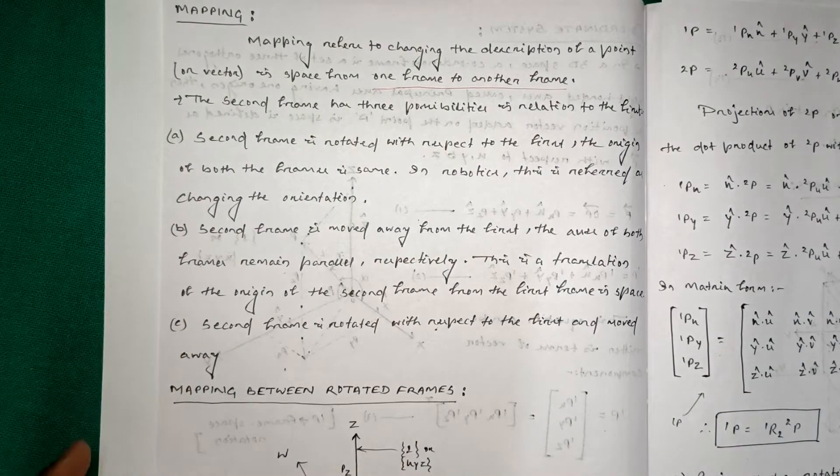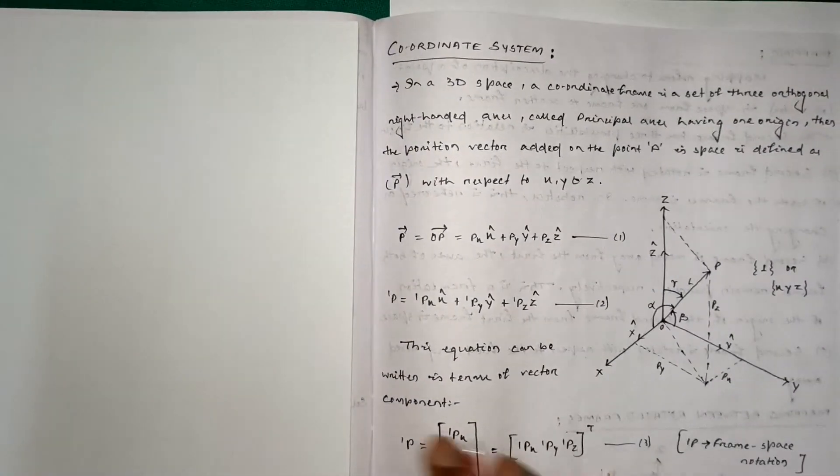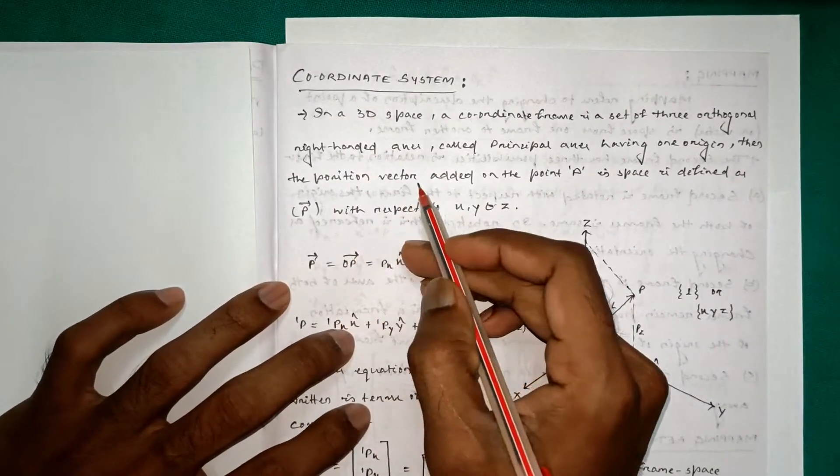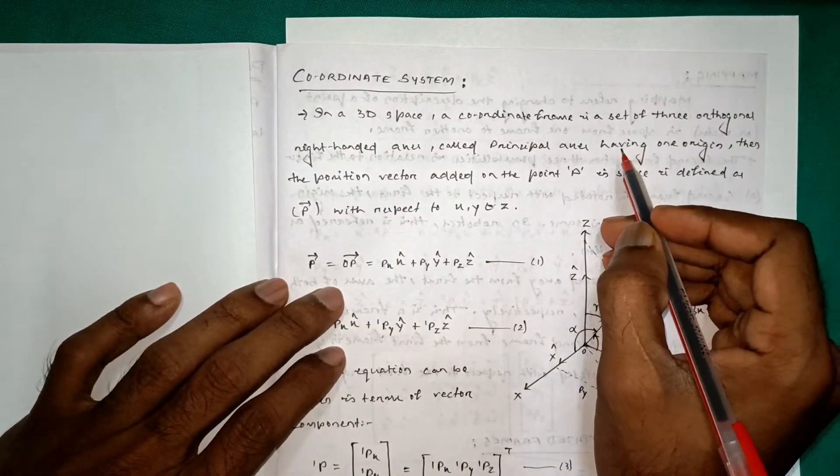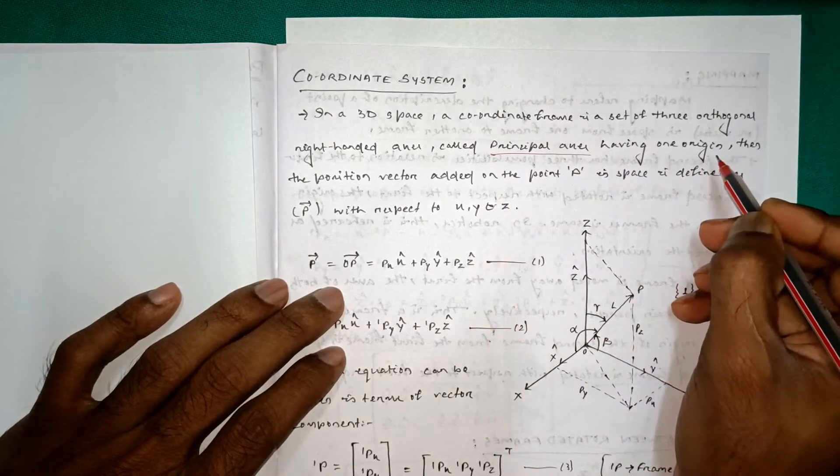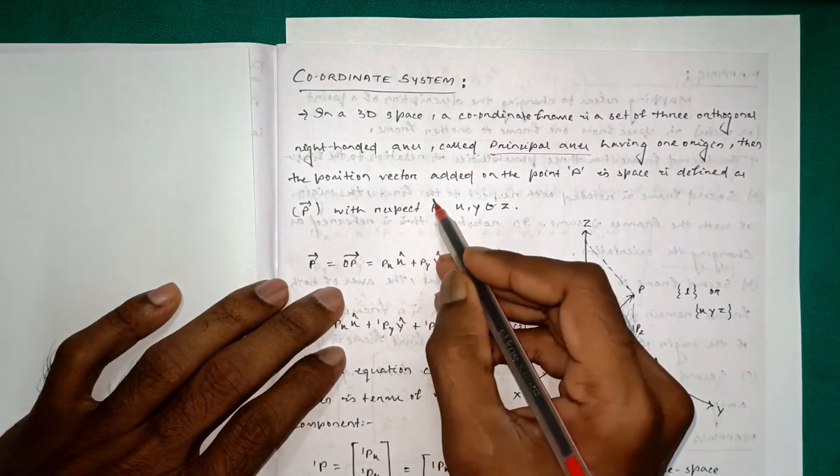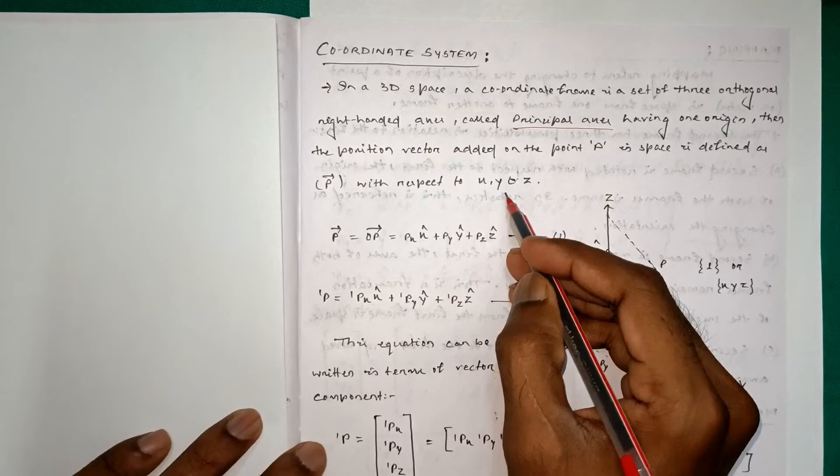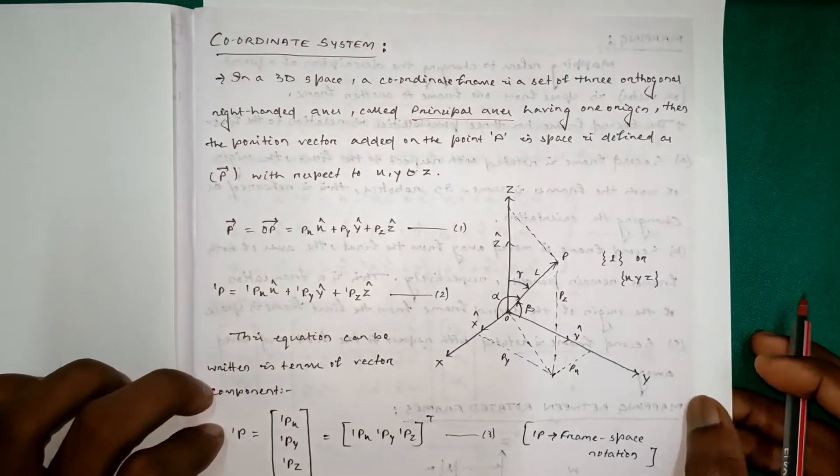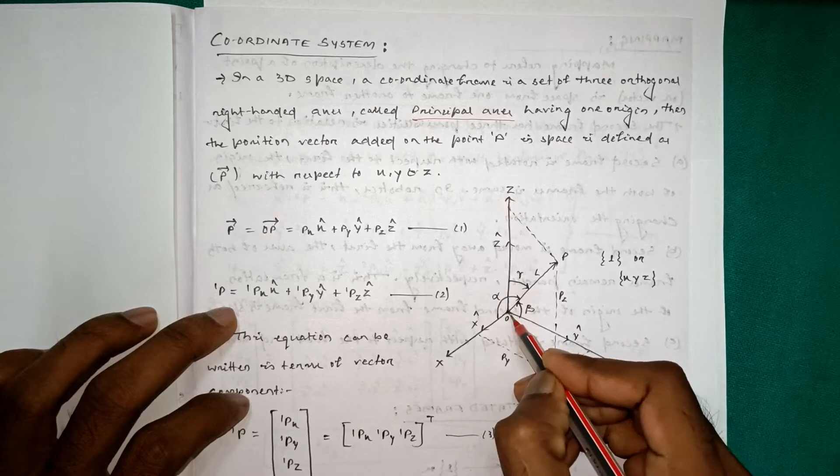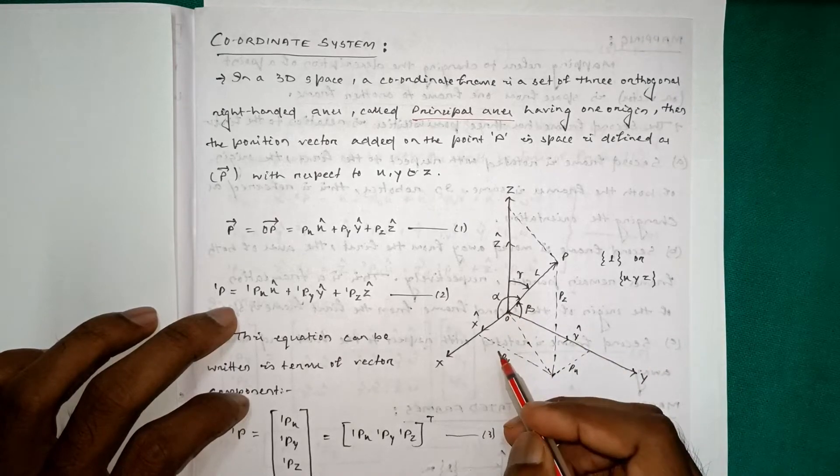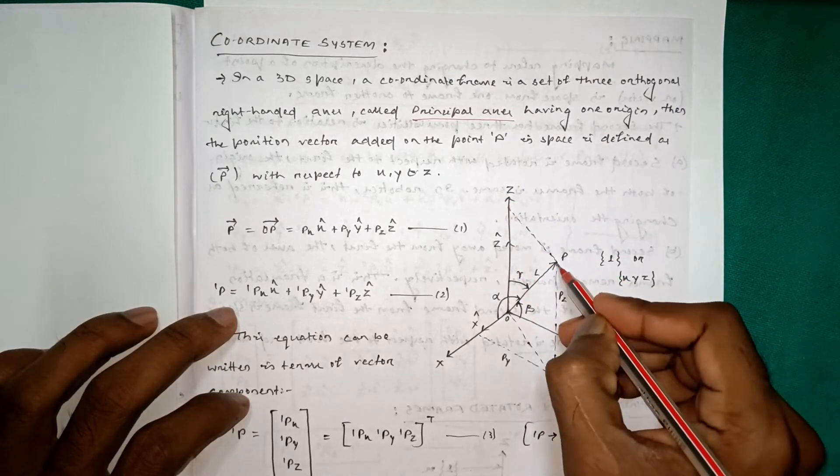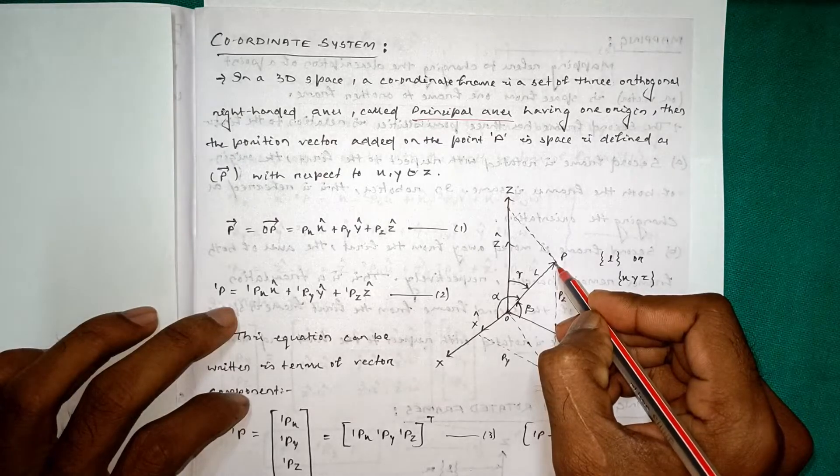So before moving forward, we know about coordinate system. In a 3D space, a coordinate frame is a set of three orthogonal right-handed axes called principal axes having one origin. Then the position vector added on the point P in space is defined as P with respect to X, Y and Z. So here we can see this is the origin named as O and three axes X, Y and Z - these three axes are called principal axes. So here we have taken a point in space that is P.